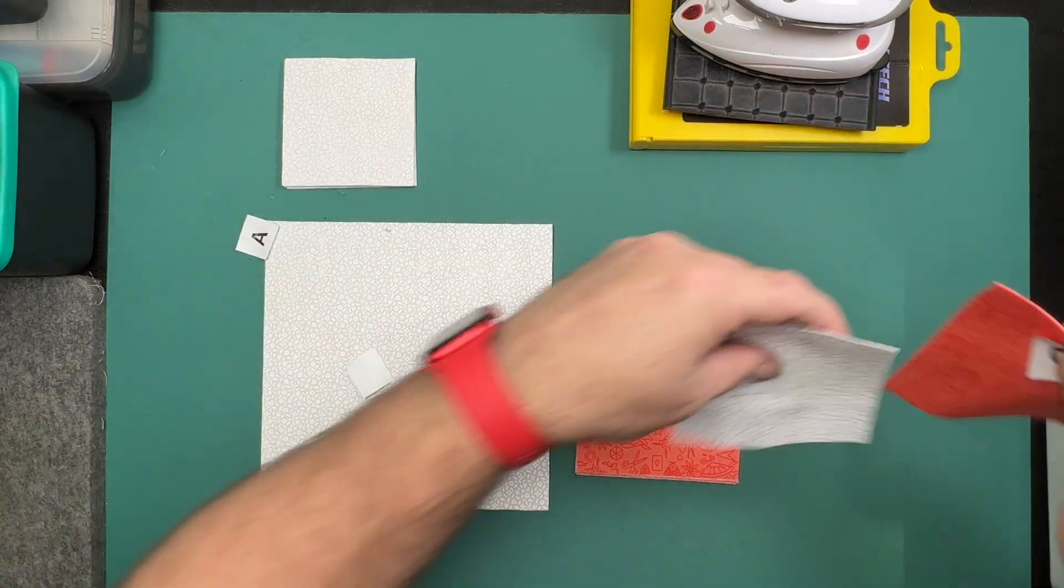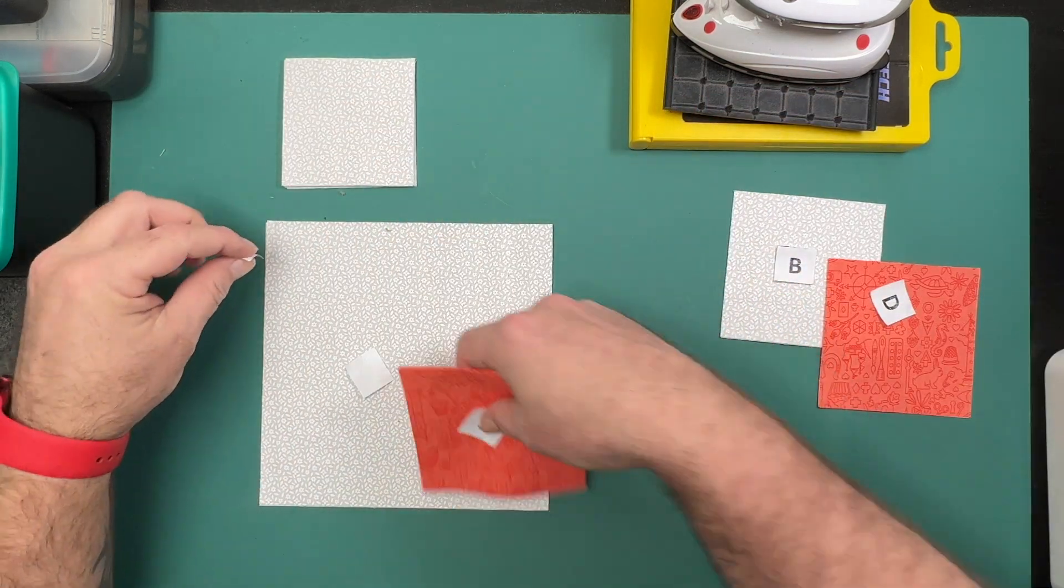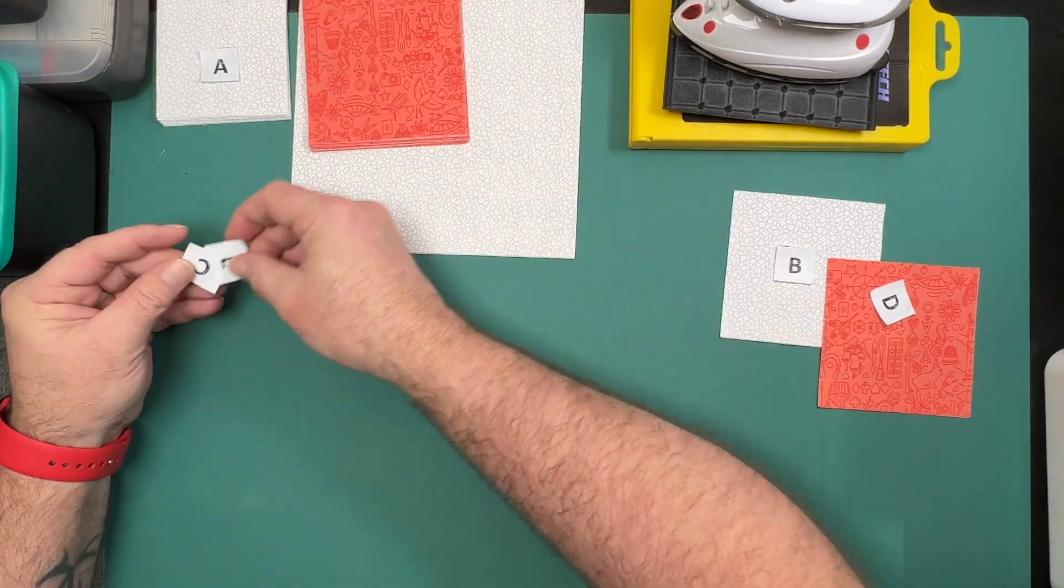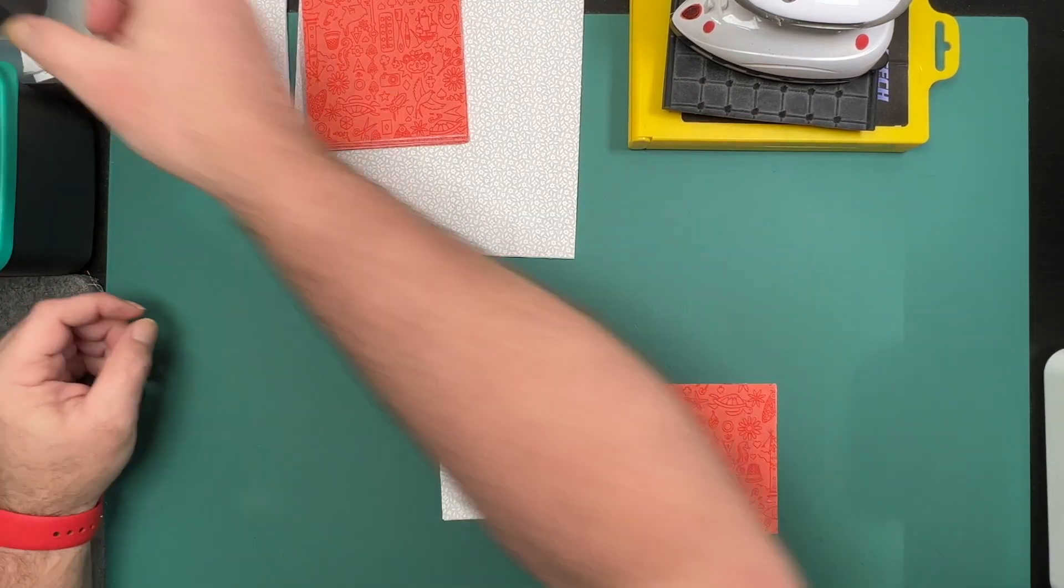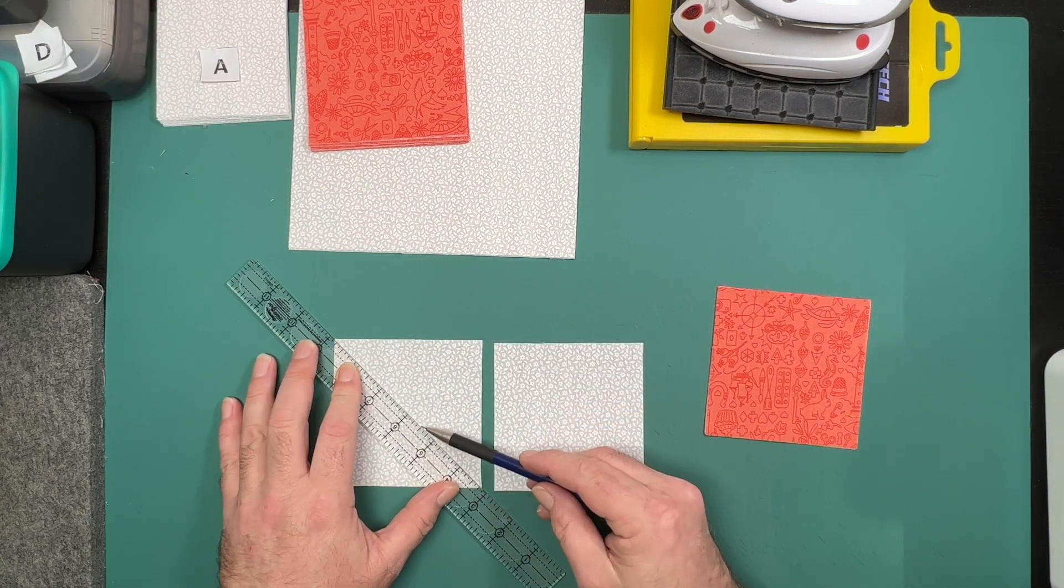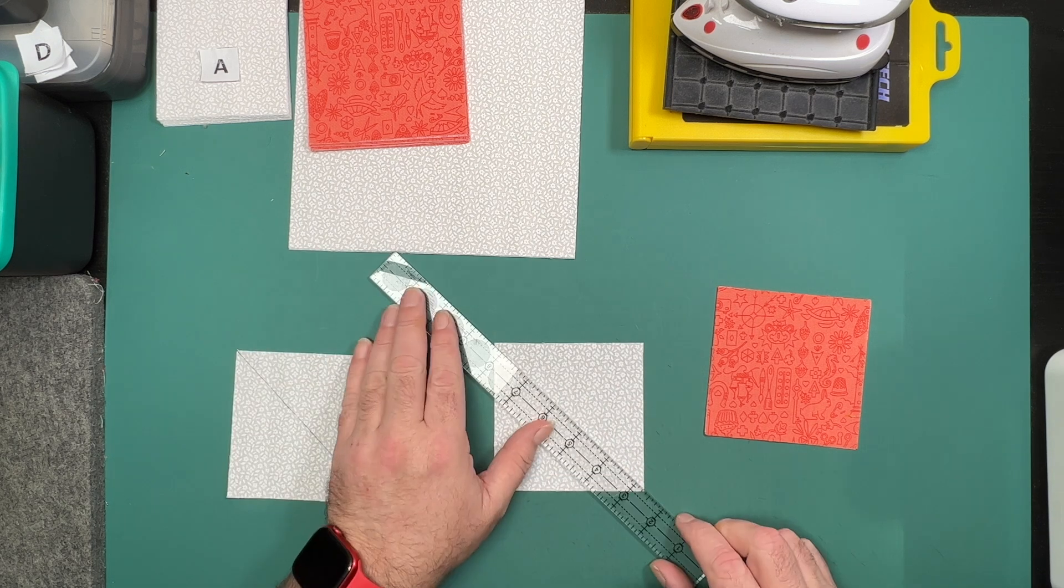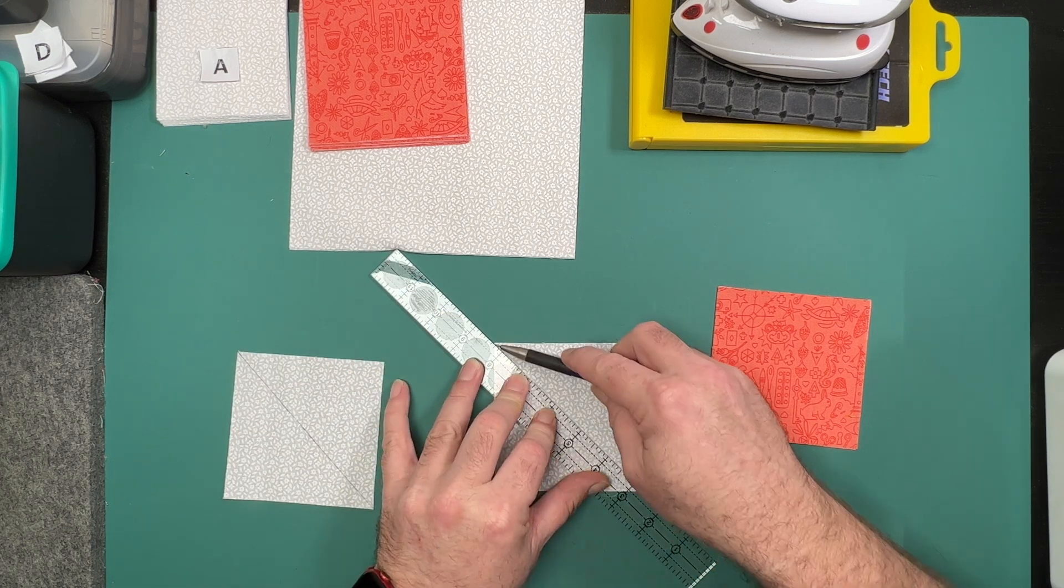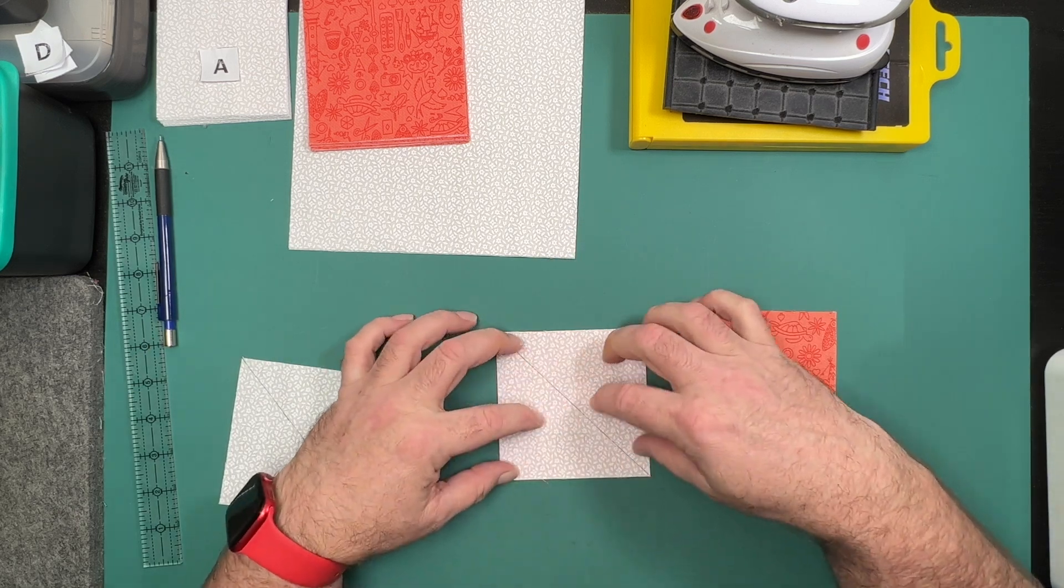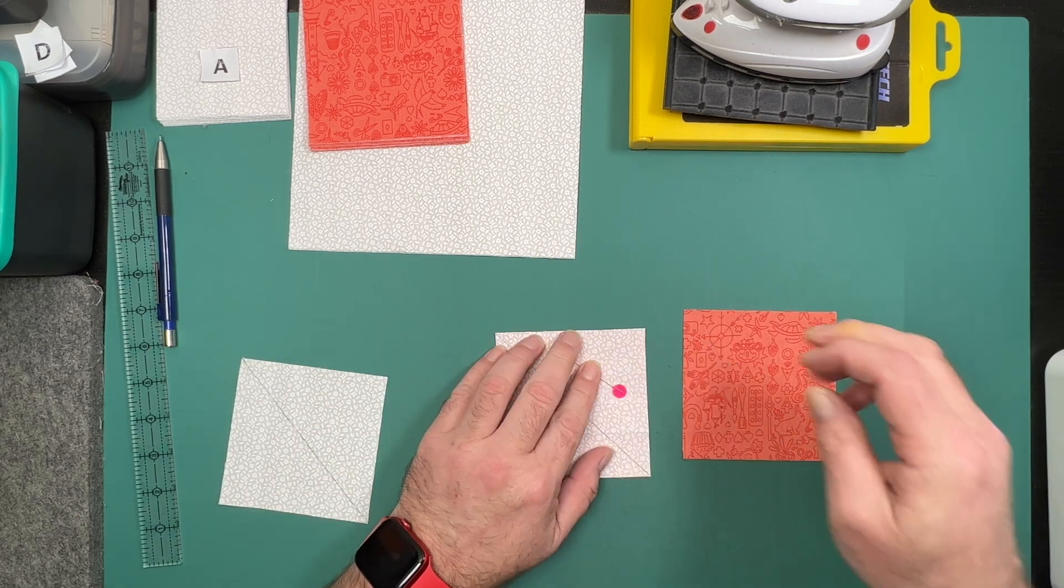We'll start by making the half square triangles that we need for the center of this block. For that we need pieces B and D. We'll take pieces B and draw a diagonal line on the back side of both before matching them up right sides together with our D fabric and taking it to the machine and stitching a quarter of an inch on each side of our drawn line.